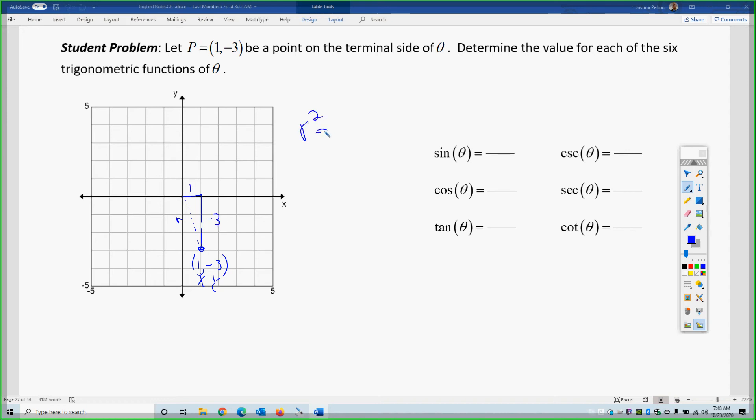r squared equals 1 squared plus negative 3 squared. So, r equals the square root of 1 plus 9, which r equals the square root of 10. 10 is 2 times 5, which, therefore, the radical cannot be broken down. So, that is the value we are going to have to use. Do not round and give the decimal value.